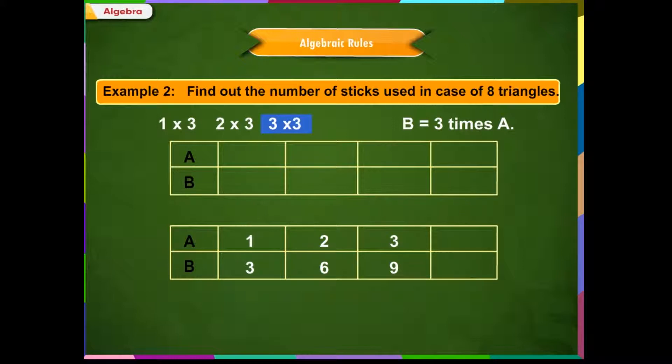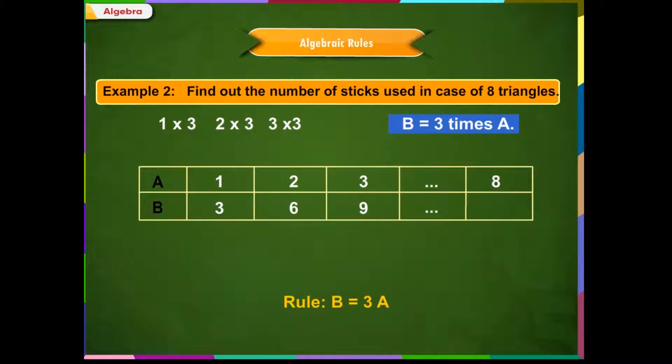So, for every number in A, the respective number in B is 3 times of it. So, we can make the rule as B is equal to 3 times A. Now, if we want to find out the number of sticks used in case of 8 triangles, we will simply find B is equal to 3 into 8, which equals 24. This means when there are 8 triangles, then 24 sticks are used.